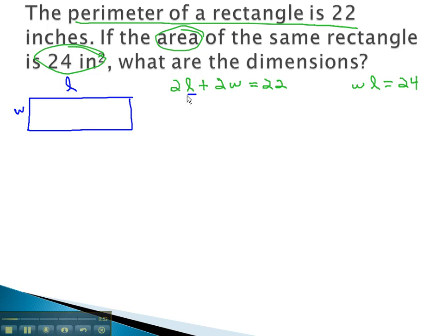Let's solve for L. We can start getting the L alone by subtracting 2W from both sides. 2L is equal to 22 minus 2W.